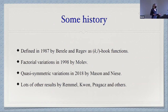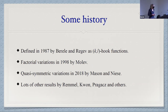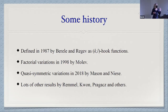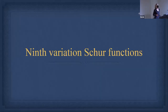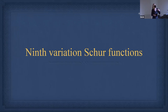These showed up originally as Kale hook functions, and in some papers they're still called hook functions, depending on what traditions the authors follow. There are lots of results — I've listed some names at the bottom. There are factorial variations by Molev, quasi-symmetric variations, and lots of variations on them, but also lots of results just about them. That was in case you've seen them before or want to be reminded of what they are.